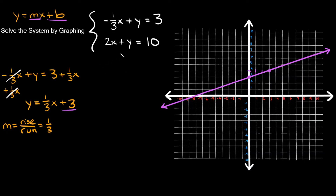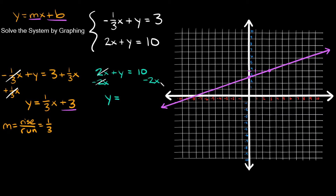Now let's graph the second equation: two x plus y equals ten. Again, turn it into slope-intercept form — isolate the y by subtracting 2x from both sides. The 2x terms cancel and we get y equals negative 2x plus ten.